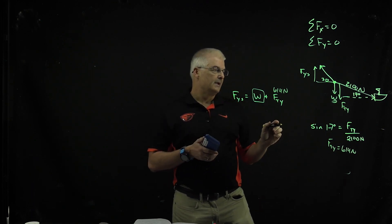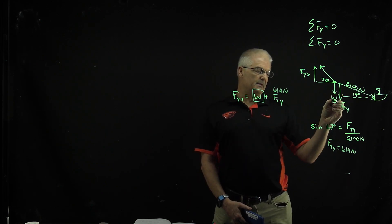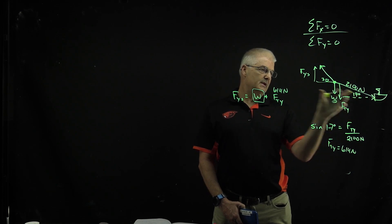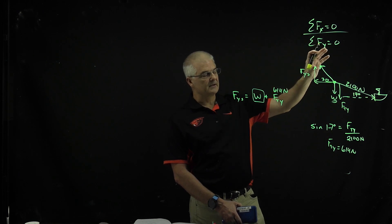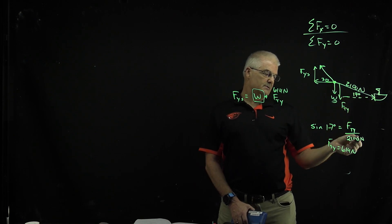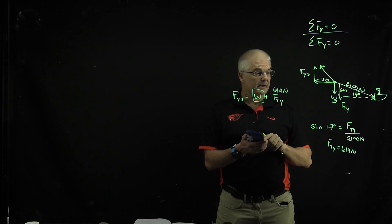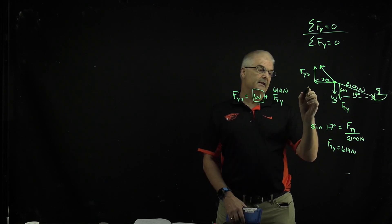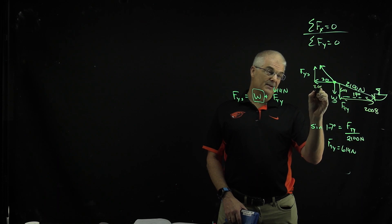Now we have to deal with the 30-degree thing. The only x variables — in the sum of forces in x — this x and this x have to balance each other out. The problem said they were moving at constant velocity, which means they're not accelerating. That's why this is an equilibrium problem. So if this is 2100 newtons, using the Pythagorean theorem: √(2100² − 614²) = 2008. So the force in the x direction from the sail is 2008 newtons.